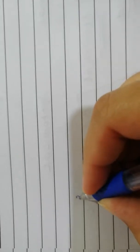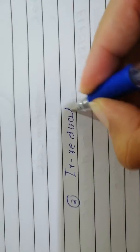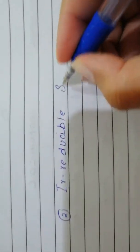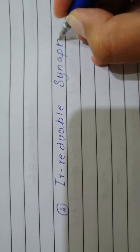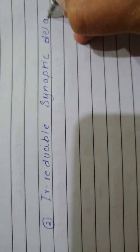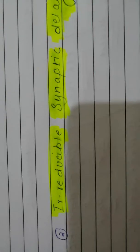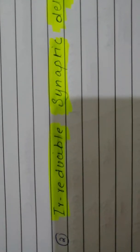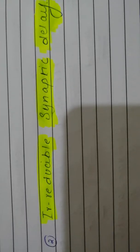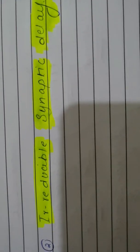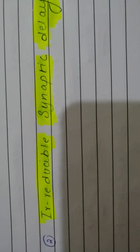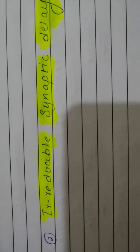The next property is an irreducible chemical synaptic delay. Because chemical synaptic transmission involves the release of a neurotransmitter, it takes time for that neurotransmitter to travel the distance of the synaptic cleft and finally bind with the receptors — so there will always be a delay.